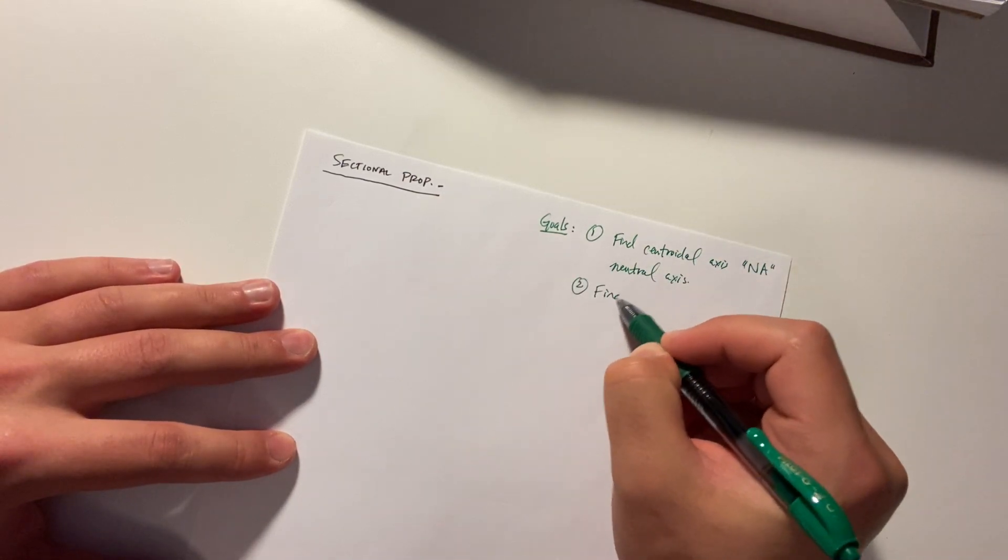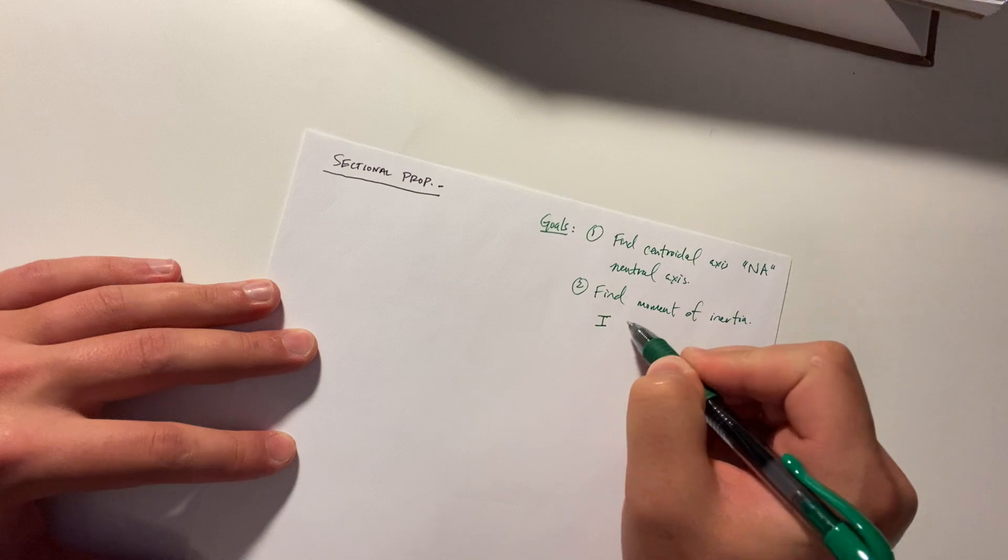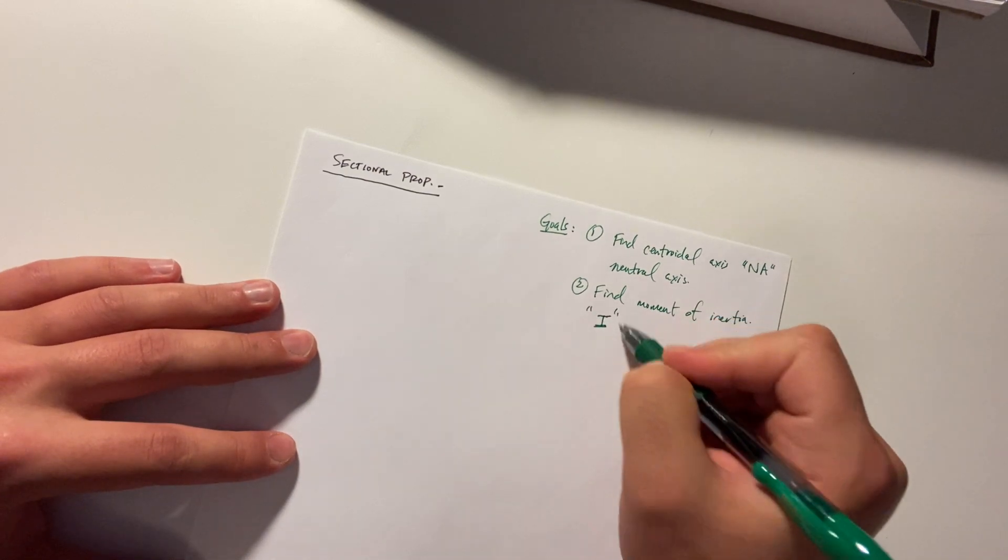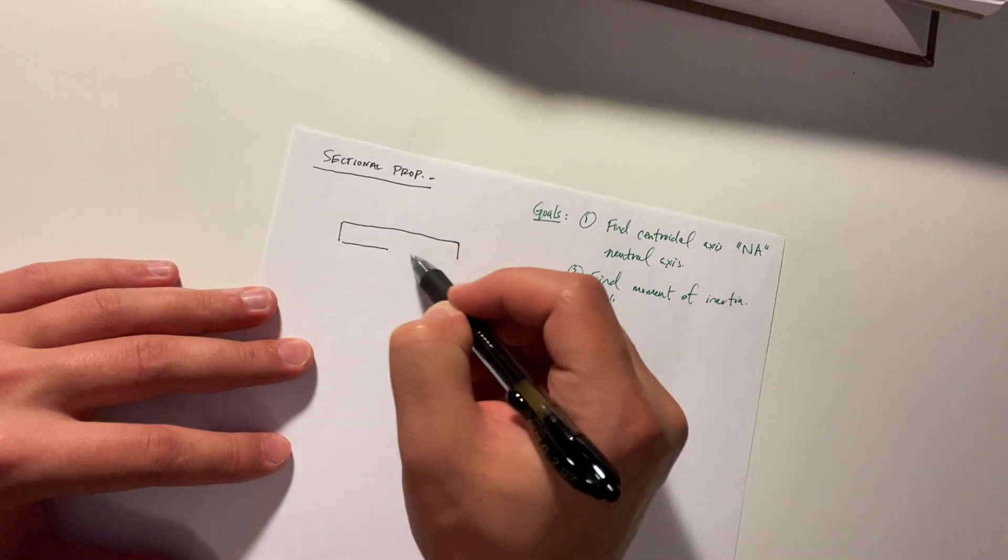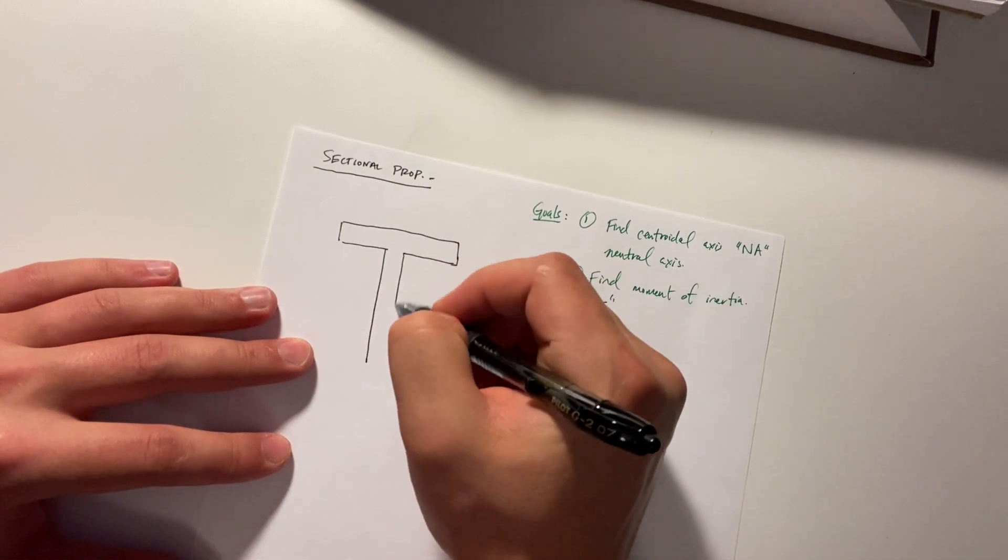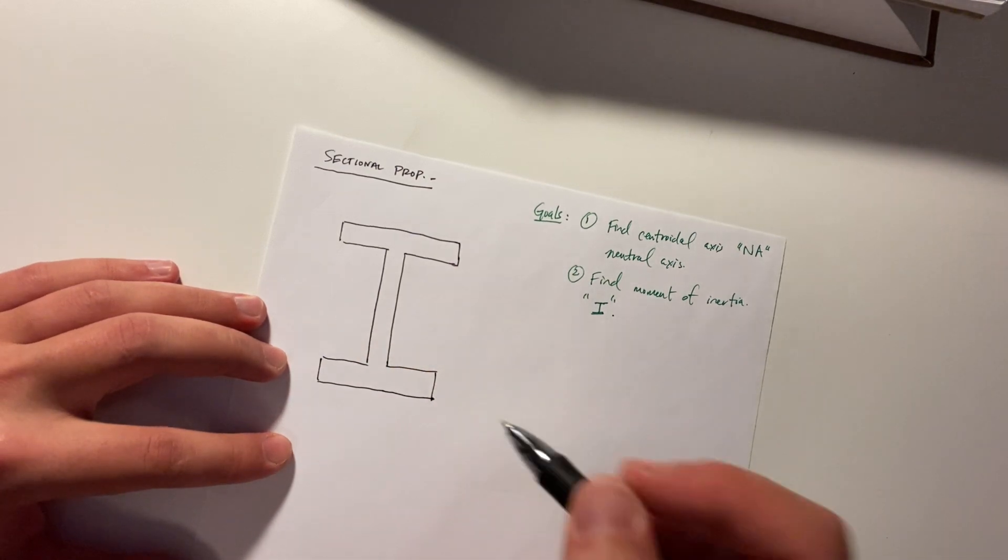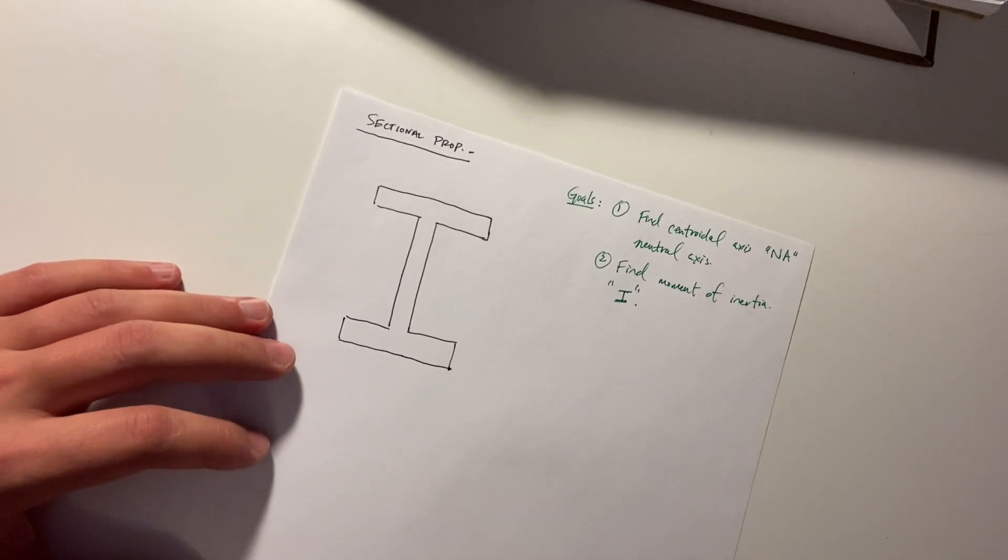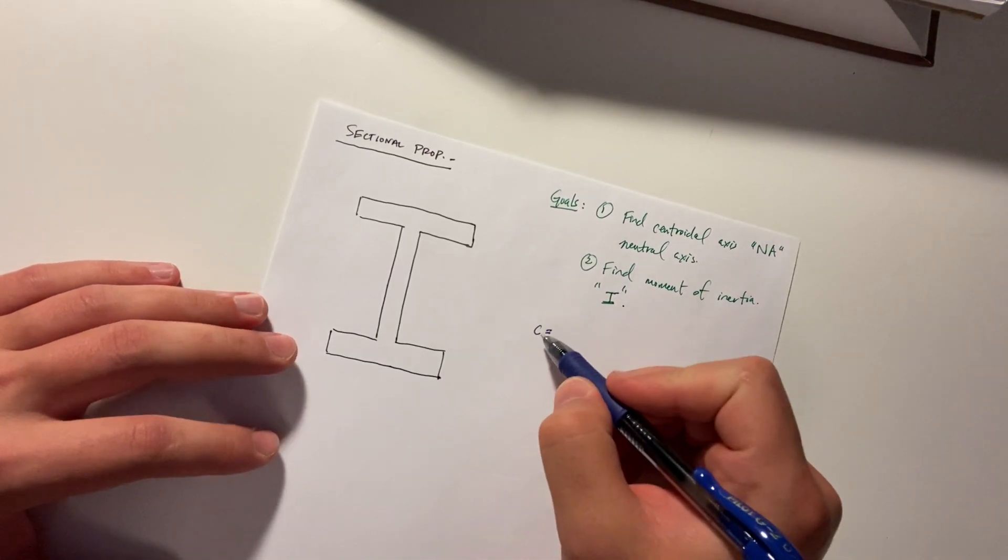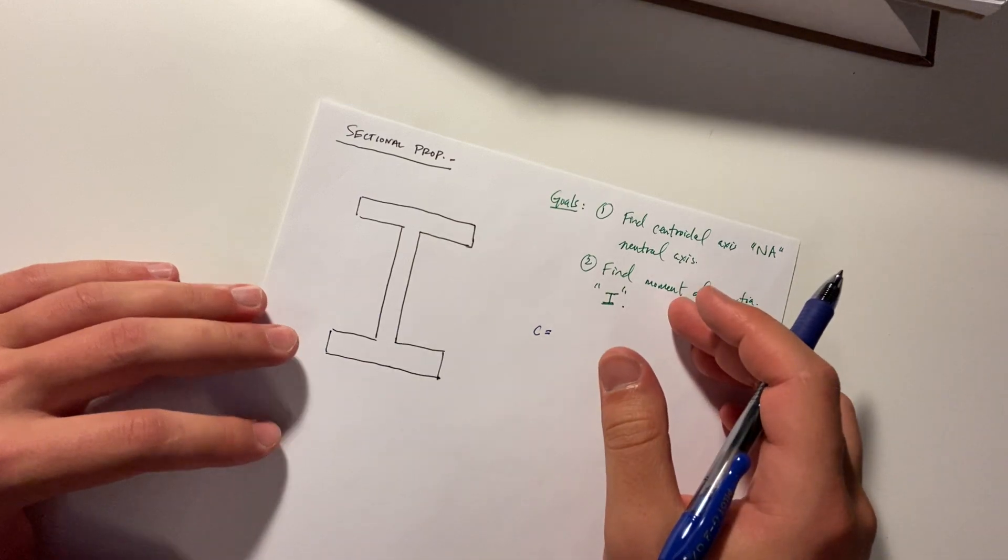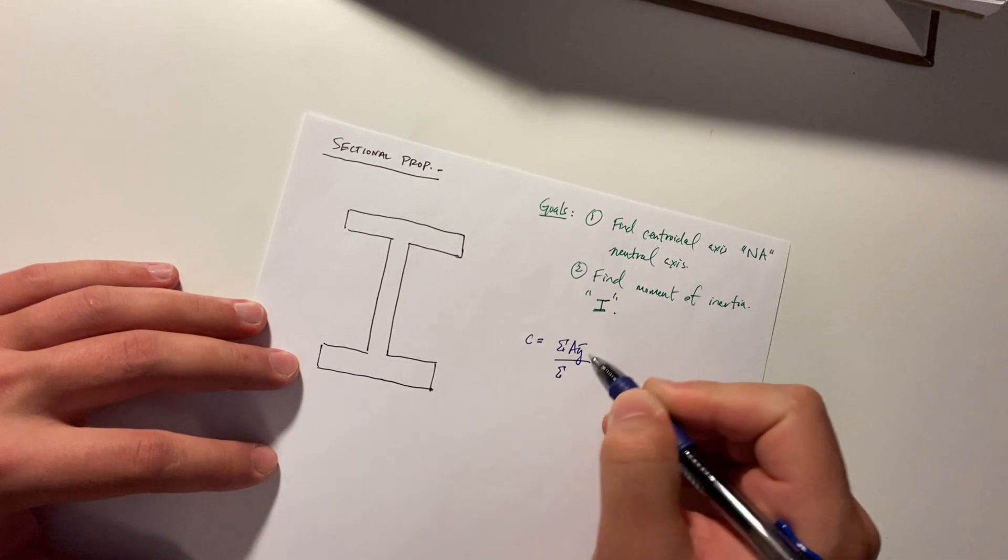Then we are going to find the moment of inertia, which is this I thing that you see everywhere. Let's draw some generic I-beam. You're going to deal with I-beams a lot in your career and in school. So our centroid is going to be the summation of AY bar over the summation of A.